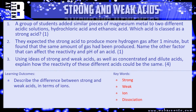Let's have a look at a few questions. Question one: a group of students added similar pieces of magnesium metal to two different acidic solutions — one hydrochloric acid, and the other ethanoic acid. Which acid is classed as a strong acid — hydrochloric or ethanoic? That's one mark.